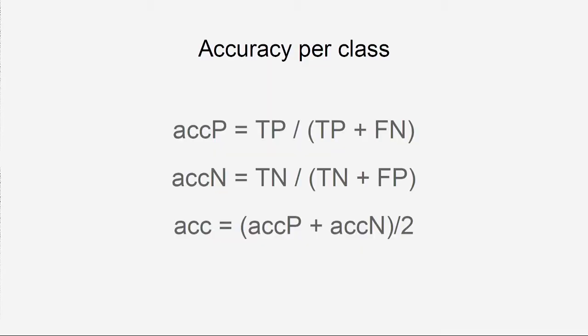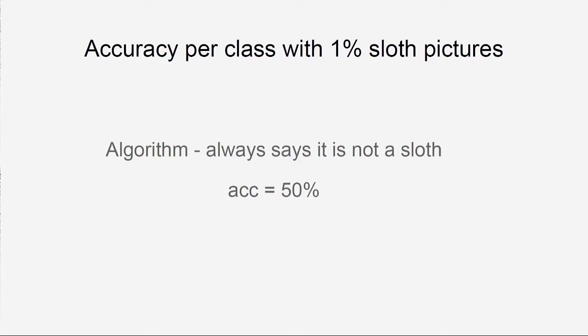What we can do now is use accuracy per class. We have the positive class — pictures with slots — and the negative class — pictures without slots. For the positive class, we get how many slot pictures we guessed right: true positive divided by true positive plus false negative. The same for negative accuracy. Then we average these two for our final accuracy. If the algorithm always says there is no slot, we get 0% for slot pictures and 100% for pictures without slots — on average 50%. This metric represents what we want much better.